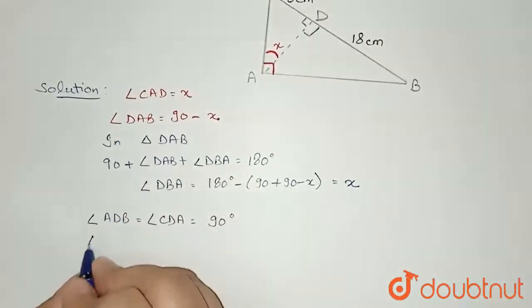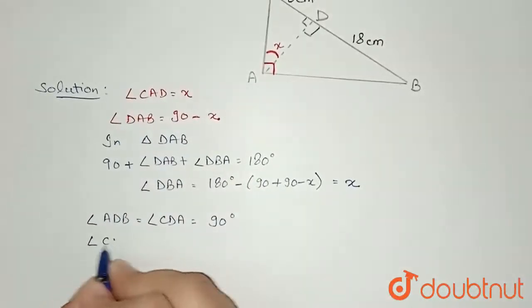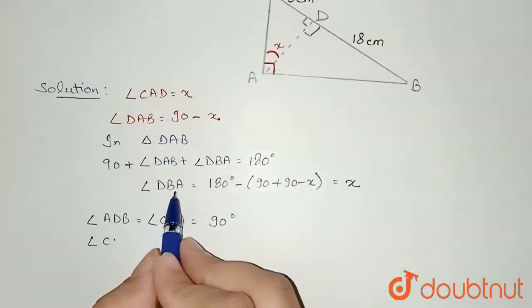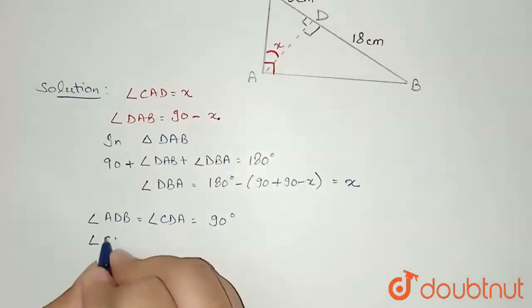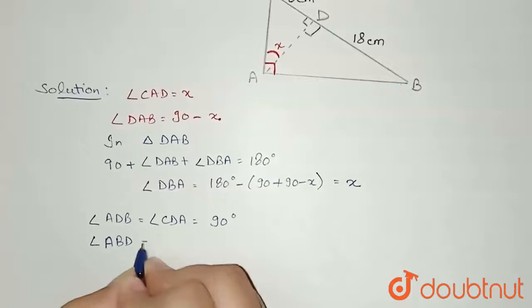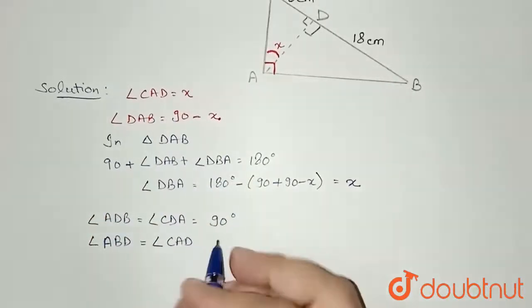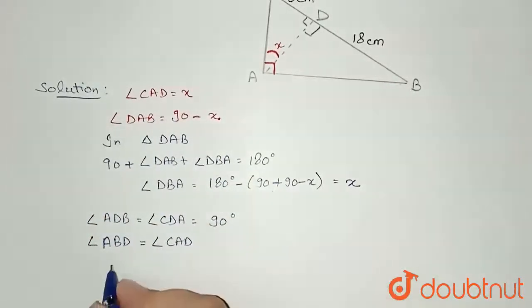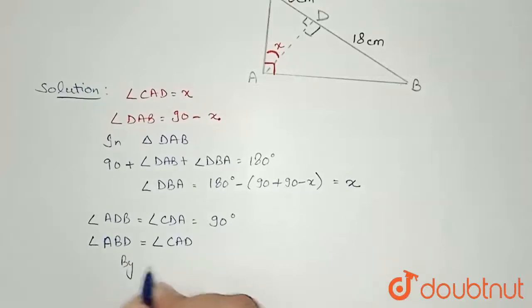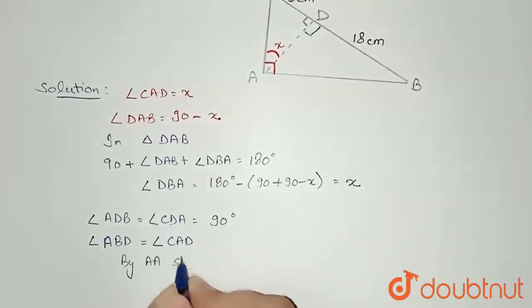We have found that angle ABD equals angle CAD. So by angle-angle similarity rule, since two angles we have got, by angle-angle similarity rule we can conclude that: